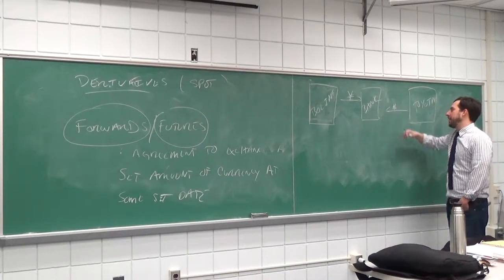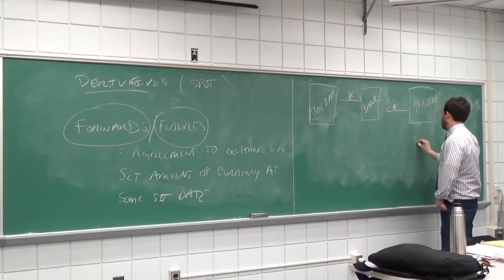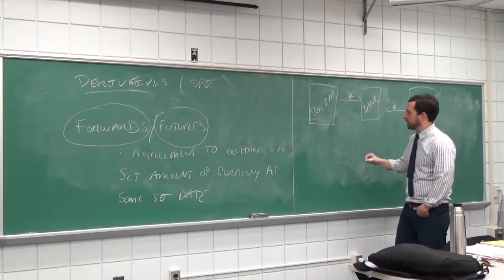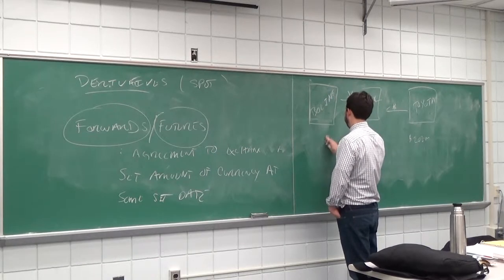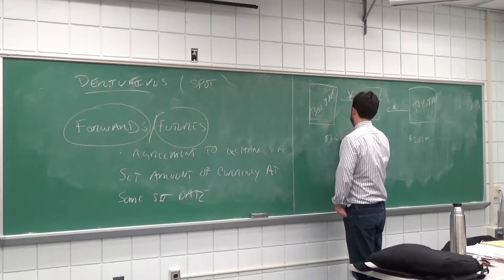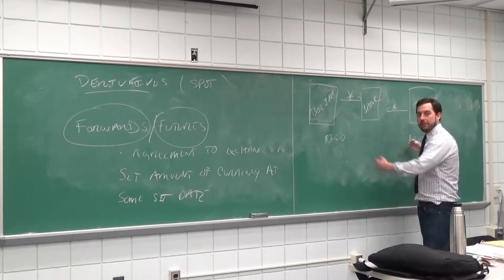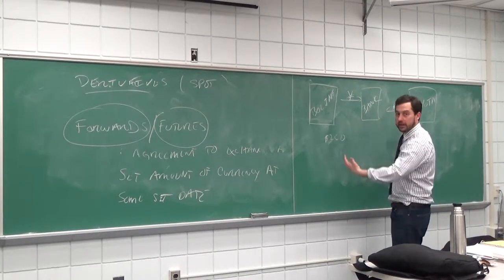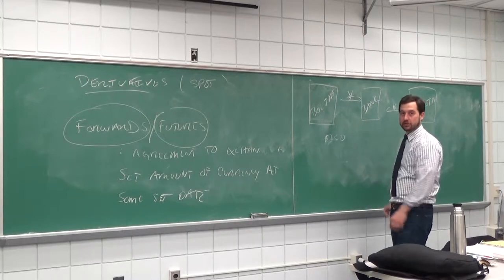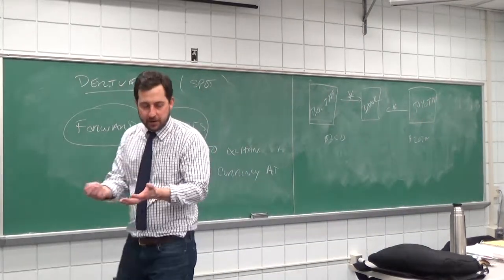Of course, the bank does a lot of things. Maybe Toyota only wants to convert 200 million, but Boeing wants the equivalent of 250 million. The bank may internalize and match these two, taking on the other side for 50 million to match the trade. The bank does a lot here, and of course it earns a bid-ask spread.